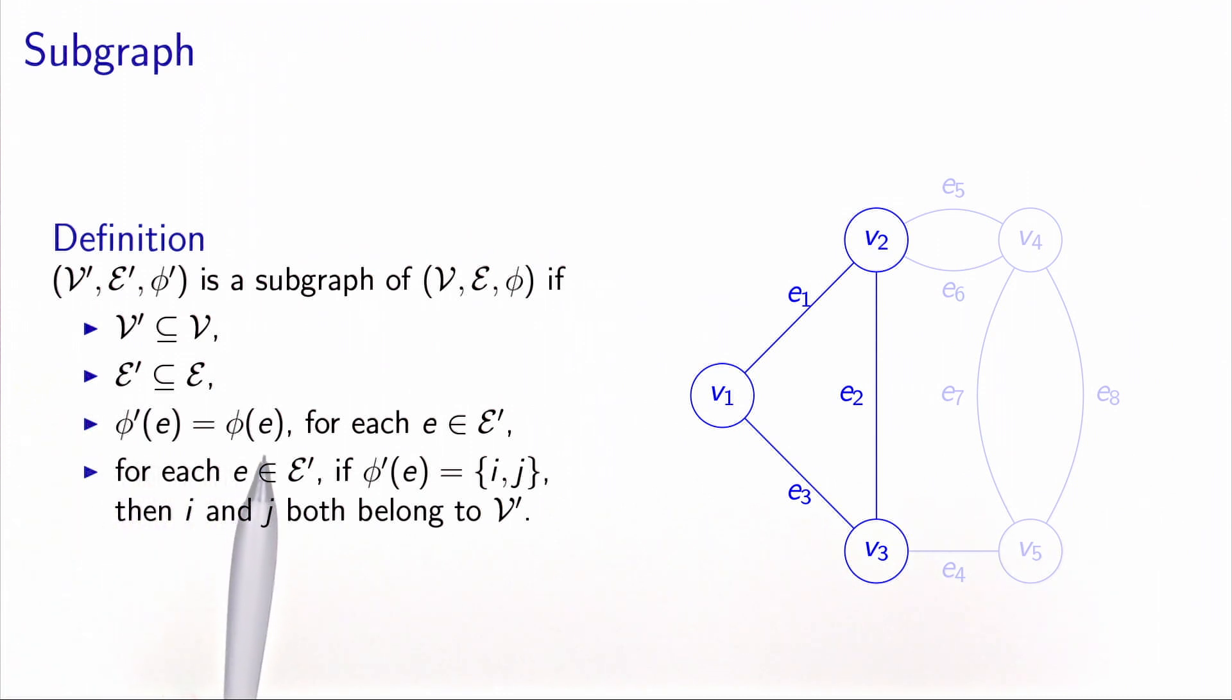The incidence functions are consistent, meaning that for each edge in the subgraph, the two vertices that are incident are the same as in the original graph. Also, if an edge is in the subgraph, then of course we need the two incident vertices to also be in the subgraph.